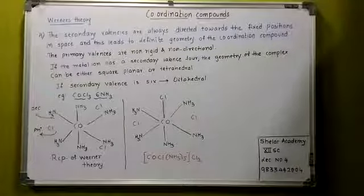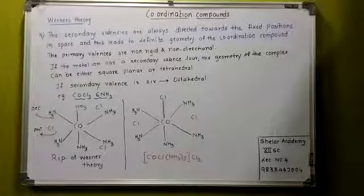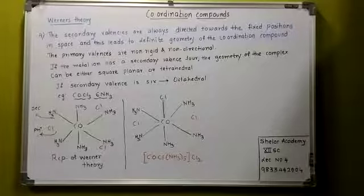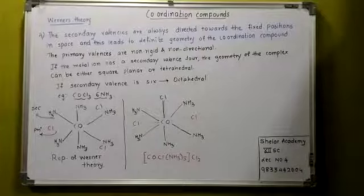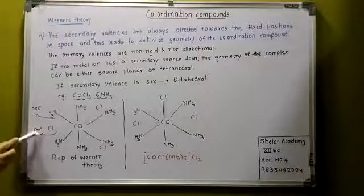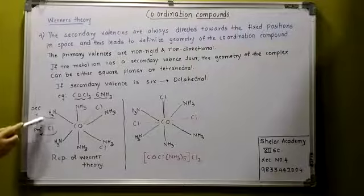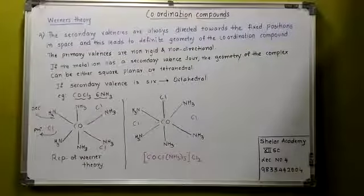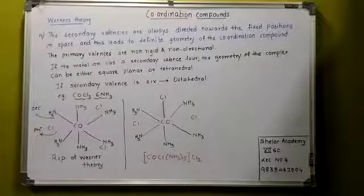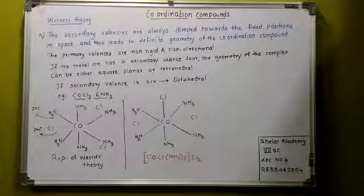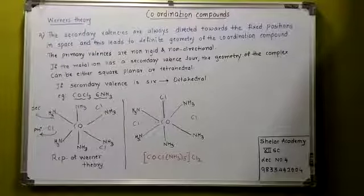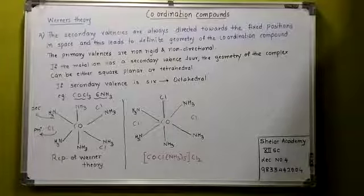The 4th point which is very important states that primary valence is non-rigid, non-directional. Secondary valence is rigid.